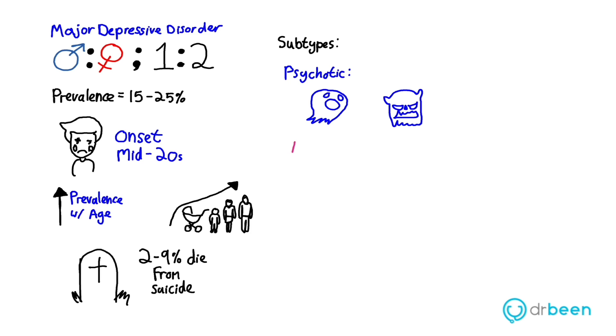You can also get atypical depression, which is characterized by weight gain, hypersomnia—so hypersomnia is sleeping a lot—and rejection sensitivity.